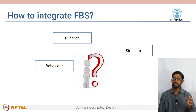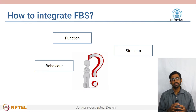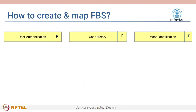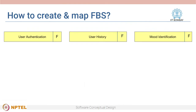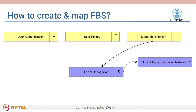Now that we have these individual F, B, and S elements, how do we go about integrating function, structure, and behavior? One way is to start from a known solution. For example, we know that there are cameras that can detect mood automatically. These could be the structures in the design solution, but we also need to evaluate if these structures are applicable in the current problem and adapt them.